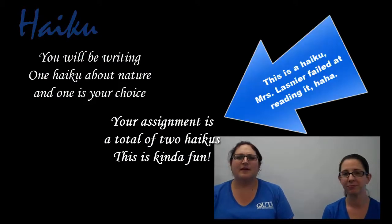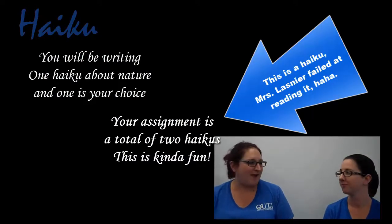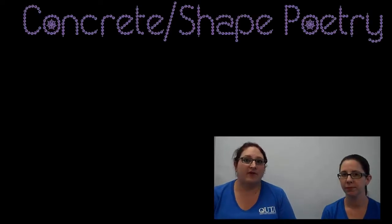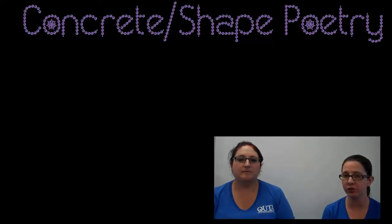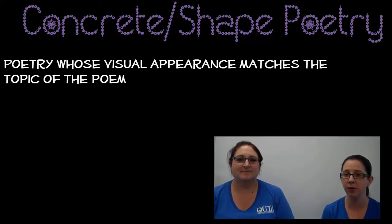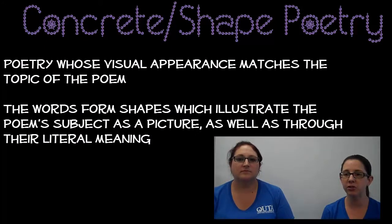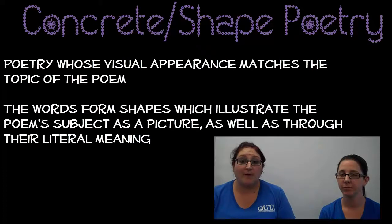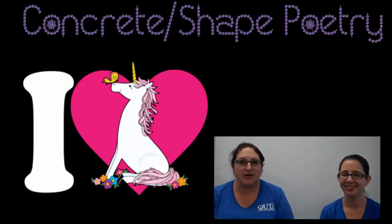This is kind of fun. Who's the weirdo now? The second type of poetry you'll be working on is concrete poetry, which is one of my very favorites. Concrete poetry is sometimes also called shape poetry. It's poetry whose visual appearance matches the topic of the poem. The words form shapes which illustrate the poem's subject as a picture, as well as through their literal meaning. So if I was going to write a poem about how much I love unicorns, I would write it in the shape of a unicorn. Isn't that cool?